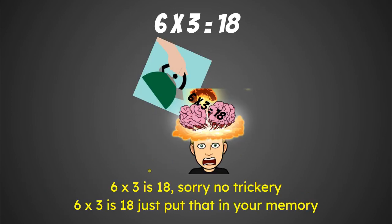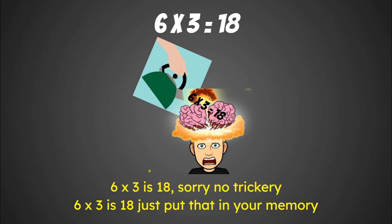Six times three is eighteen, sorry, no trickery. Six times three is eighteen, just put that in your memory. Six times four is twenty-four, which is nice. Because of the four, you take the six and you double it twice.